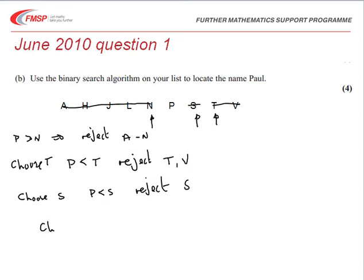And finally, we choose the middle of the list. Well, there's only one in the list, and it happens to be P. So we've found Paul is located in the list.